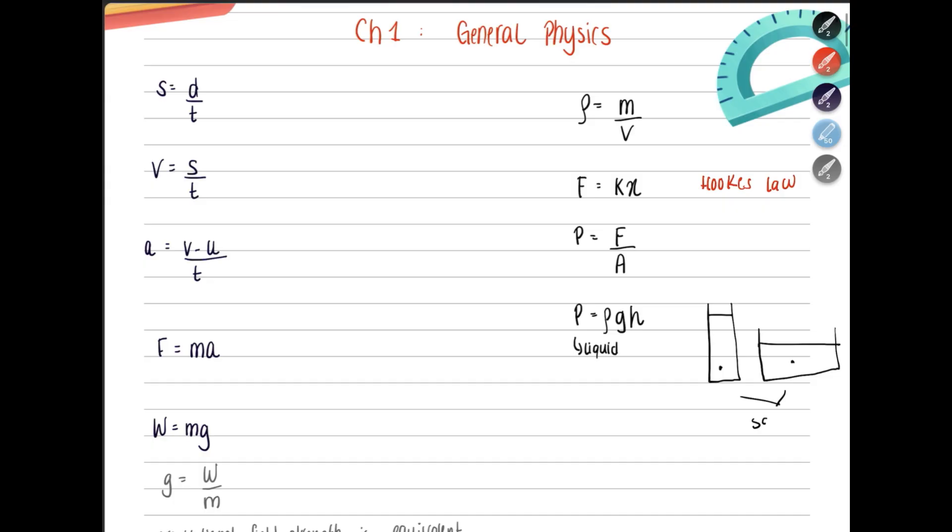So both of them have same pressure if the liquid is same. Because if the liquid is different, for example, if you have oil and water, they will have different density. So if the density changes, the pressure will change as well. Sometimes in questions, you have to equate both of them to find the unknown value as well.